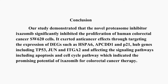Our study demonstrated that the novel proteasome inhibitor exosomib significantly inhibited the proliferation of human colorectal cancer SW620 cells. It exerted anti-cancer effects through targeting the expression of differentially expressed genes such as HSPA6, APCDD1, and P21, hub genes including tumor protein 53, JUN, and ITGA2, and effecting the signaling pathways including apoptosis and cell cycle pathway, which indicated the promising potential of exosomib for colorectal cancer therapy.